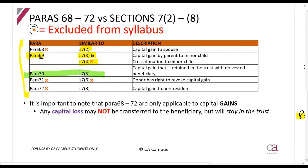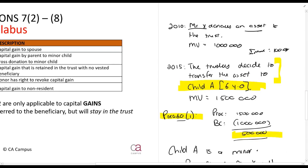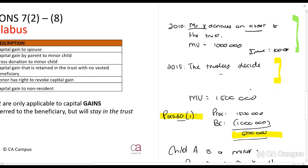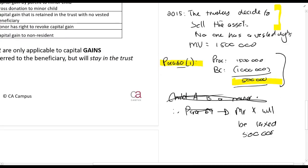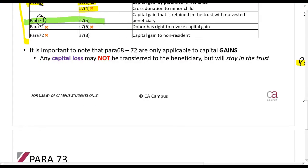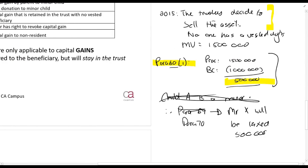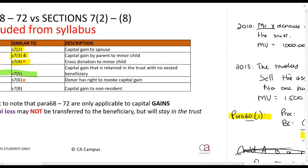Paragraph 70 applies, which is the same as section 7.5. For example, if in 2010 Mr. X donates an asset to the trust, and in 2015 the trustees decide to sell the asset and no one has a vested right, they'll still calculate the capital gain — but because no one has a vested right and the donor was still alive, paragraph 70 will apply and Mr. X will be taxed on it.